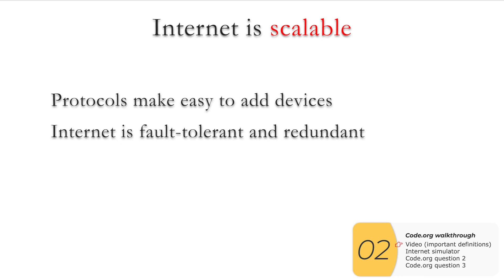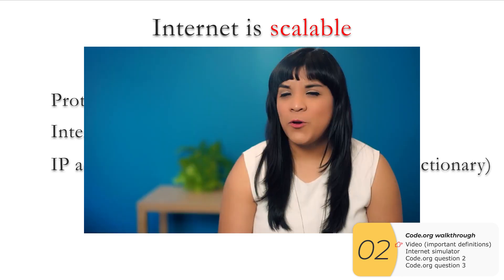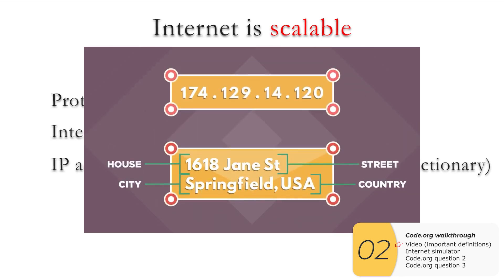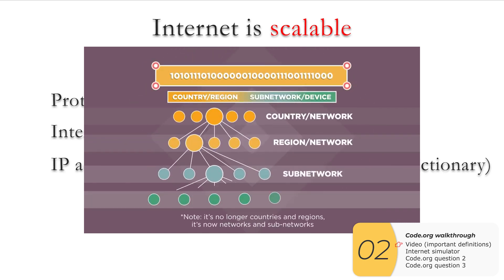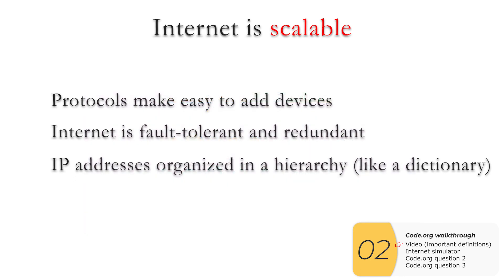In the video, they talk about IP addresses being organized in a hierarchy. This is kind of like how we organize words in a dictionary — alphabetically — which makes them easy to find. If we didn't do that, it would be impossible to find words. IP addresses being organized hierarchically is the same idea.